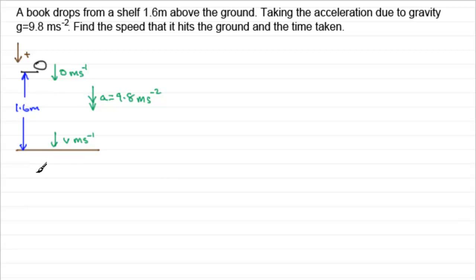So if we're going to use the equations of constant acceleration, we need to write down our variables that we would use, which is often called the SUVAT variables: S, U, V, A, and T, which we've seen before in previous videos. S for displacement, U for initial velocity, V for final velocity, A for acceleration, and T for time.